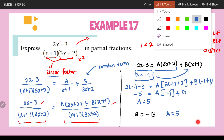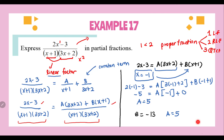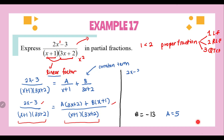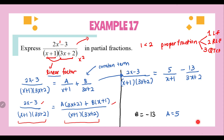We have now found the values of A and B. Next, we substitute them back into our partial fraction. So 2x minus 3 divided by (x plus 1)(3x plus 2) equals 5 over (x plus 1) plus (negative 13) over (3x plus 2). This is how we express the given fraction as a partial fraction. I hope you can follow Example 17.